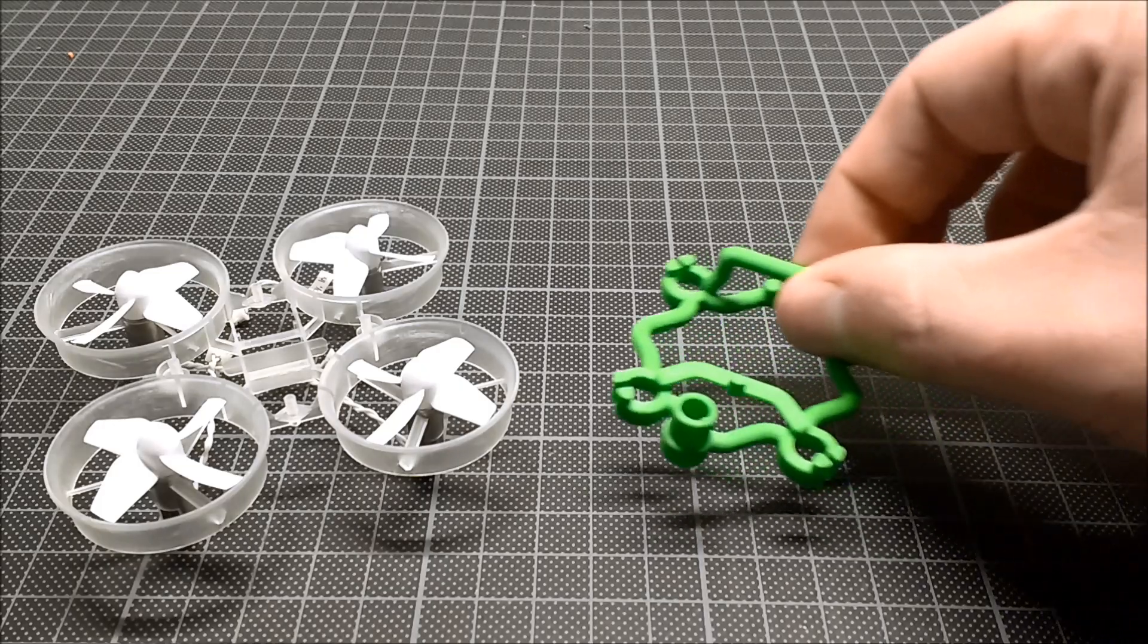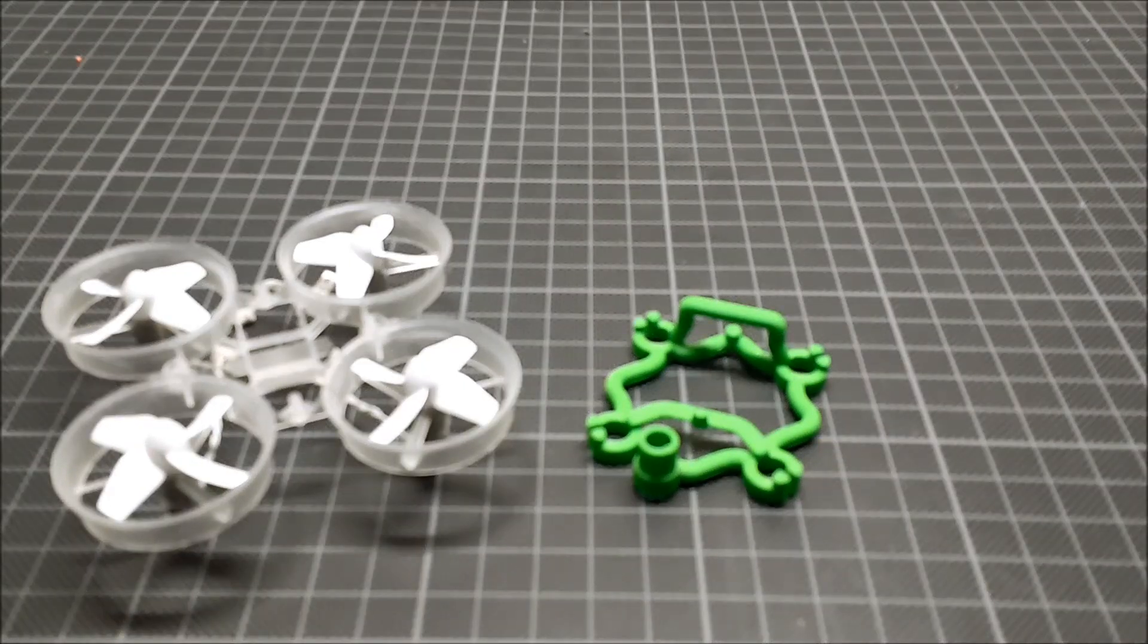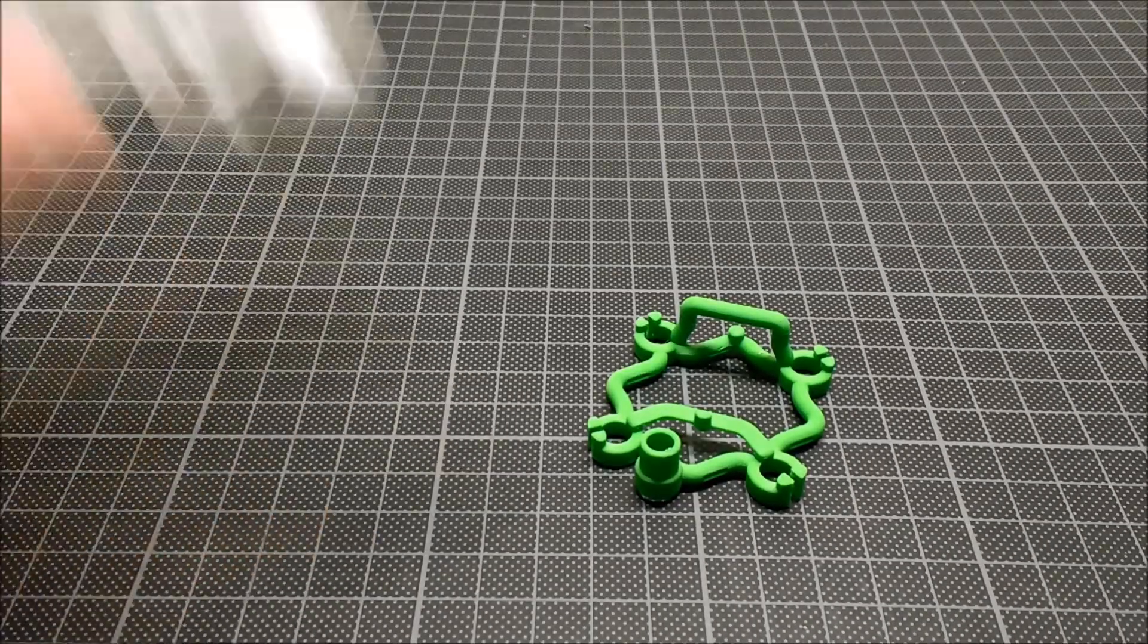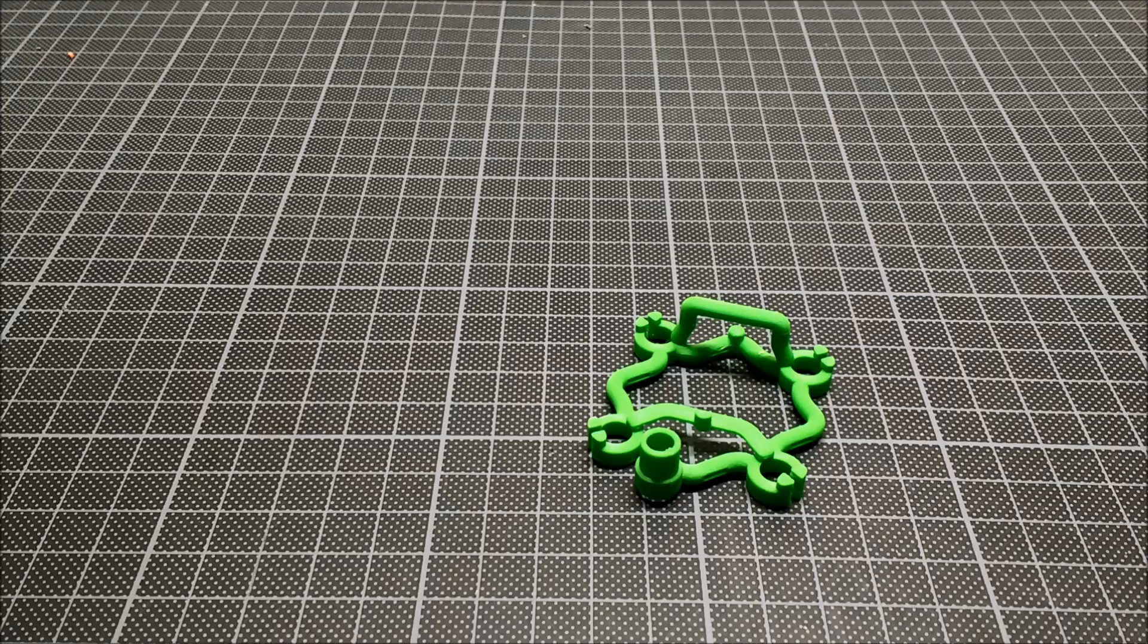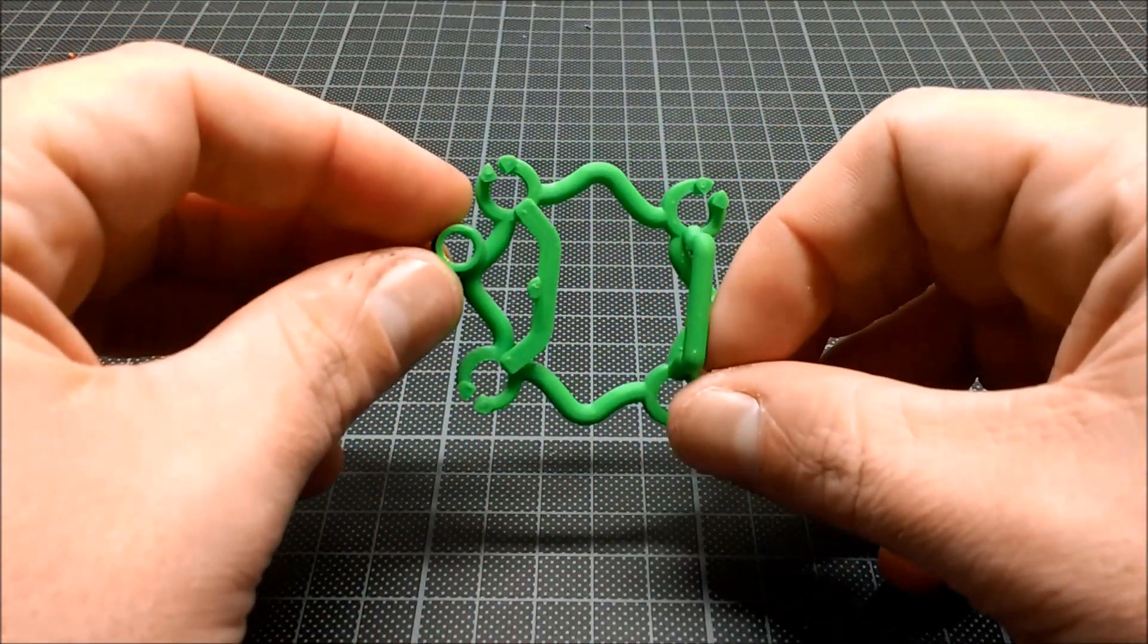Let's start with the mainframe itself. This particular version is designed to hold a tiny whoop mainboard, an all-in-one camera and video transmitter unit, 7 on 16mm motors and an e-sheen-style one-cell lipo battery. More about lipos in just a minute.